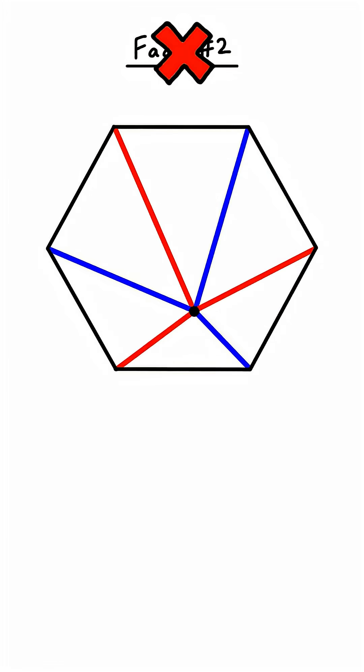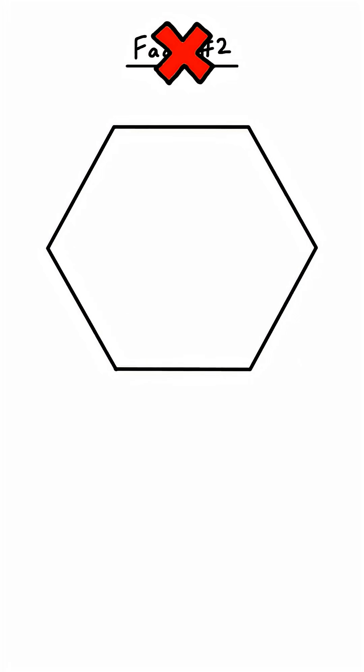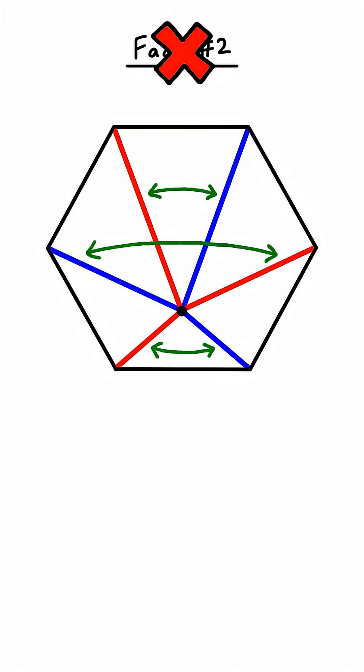The second fact is the fake one. Consider an extreme scenario where the point is very close to a vertex. This causes one of the blue lines to disappear, so the red length ends up being significantly greater. The fact does work sometimes though, but only when your point is on one of these three lines because of symmetry.